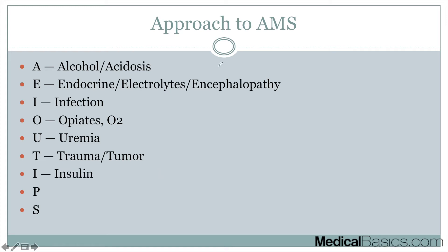I stands for insulin. This refers to DKA and hypoglycemia — the two extremes of glucose dysregulation. DKA and hypoglycemia are probably the most common causes of altered mental status in those two spectrums.